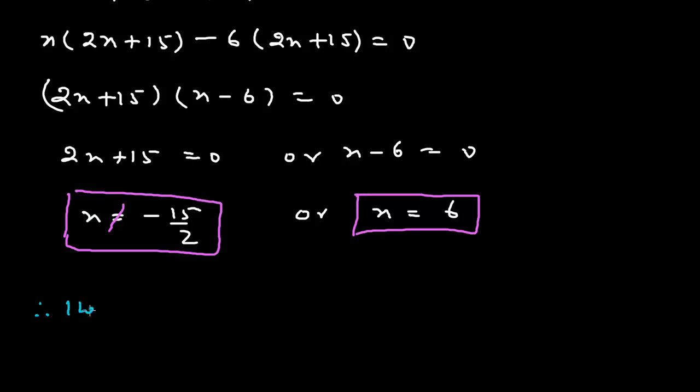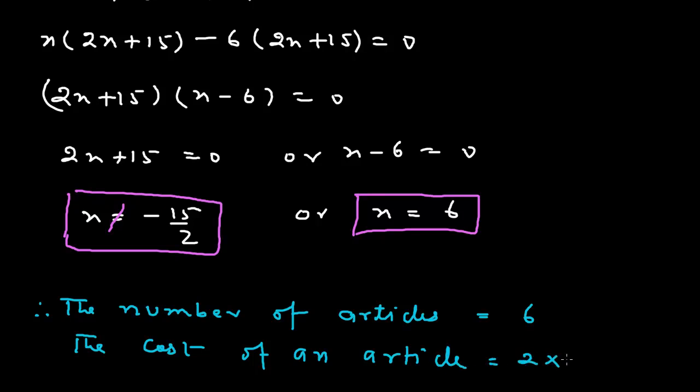The cost of an article is equals to 2 into 6 plus 3. This means rupees 15. So this is the solution of the question. Thank you.